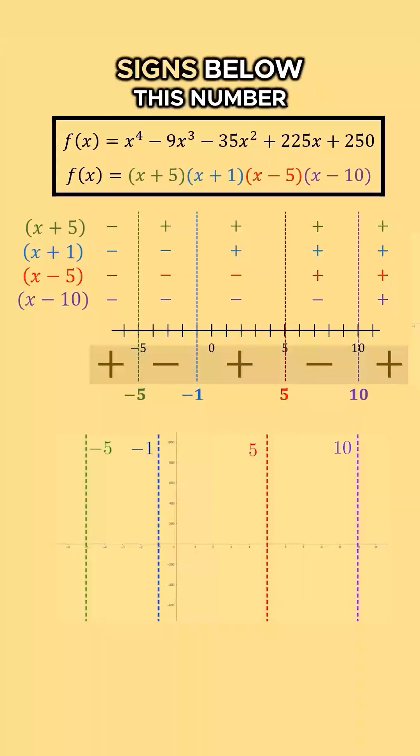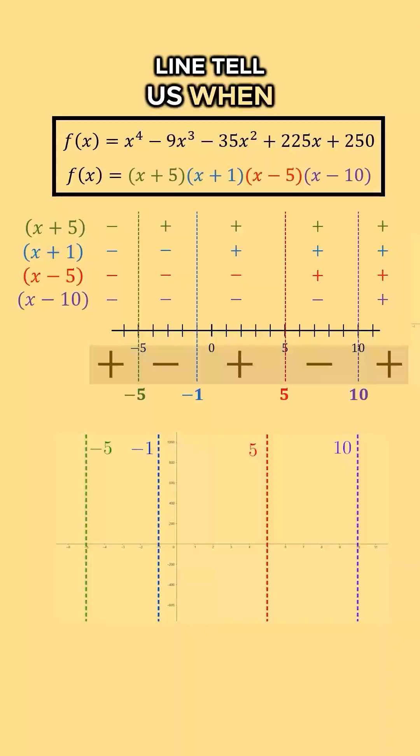The positive and negative signs below this number line tell us when f is positive and negative along the x-axis. When f has a positive section, our function will be above the x-axis.